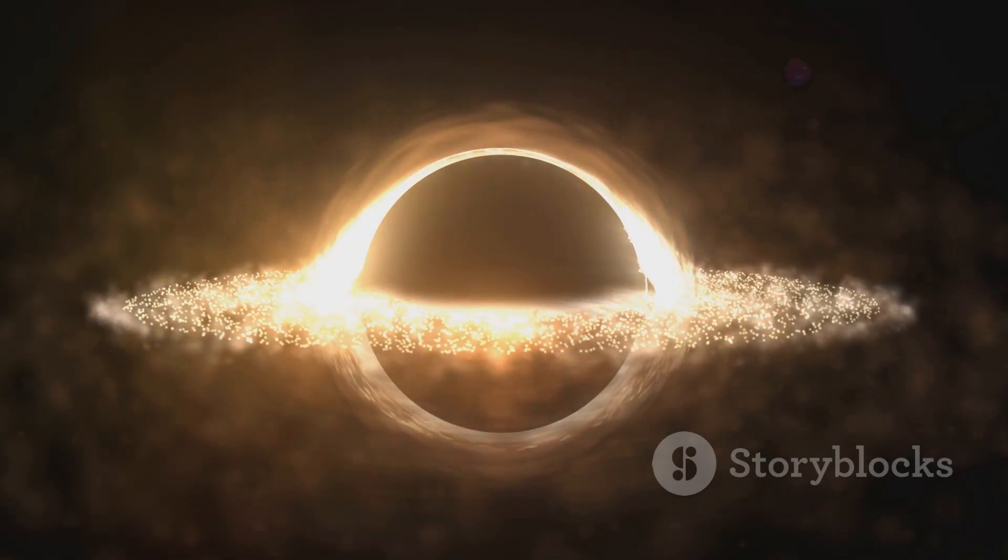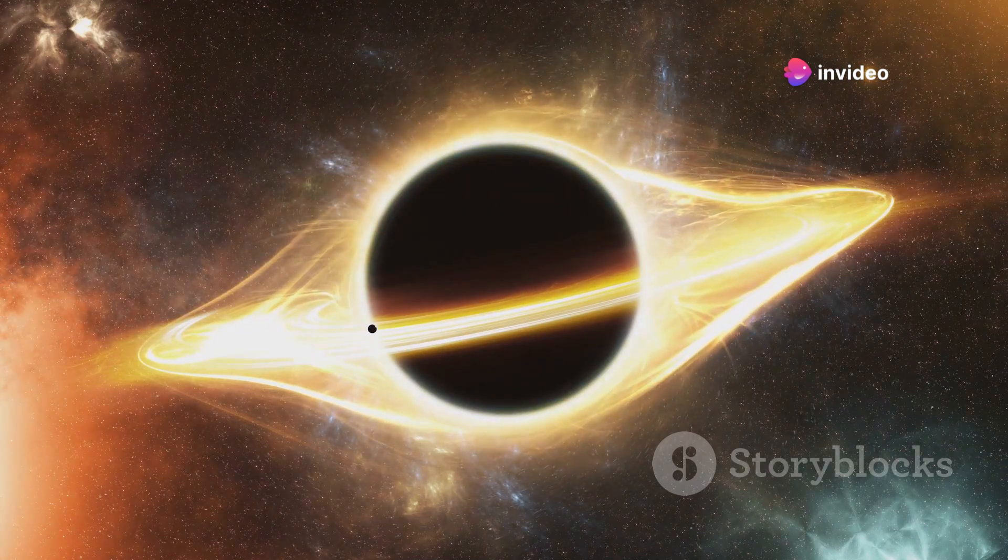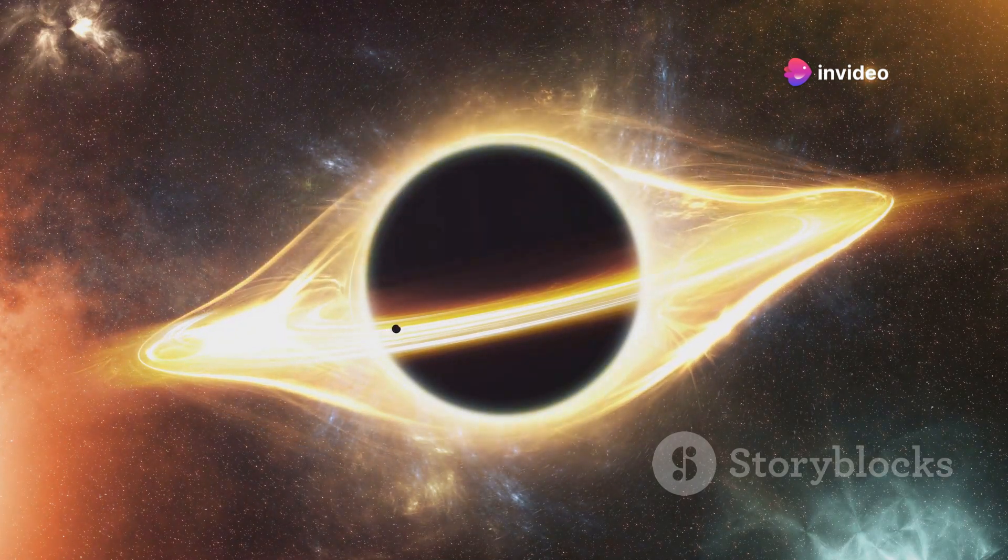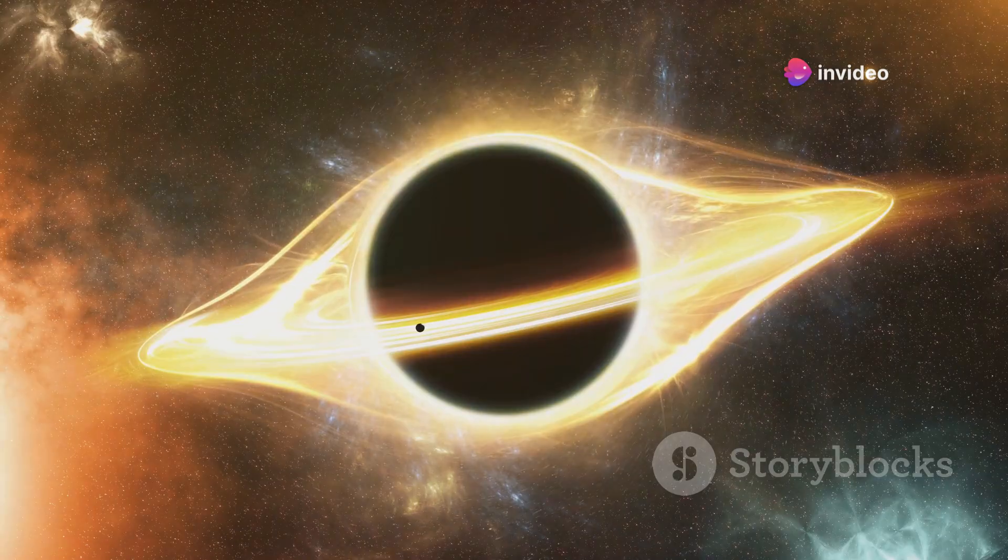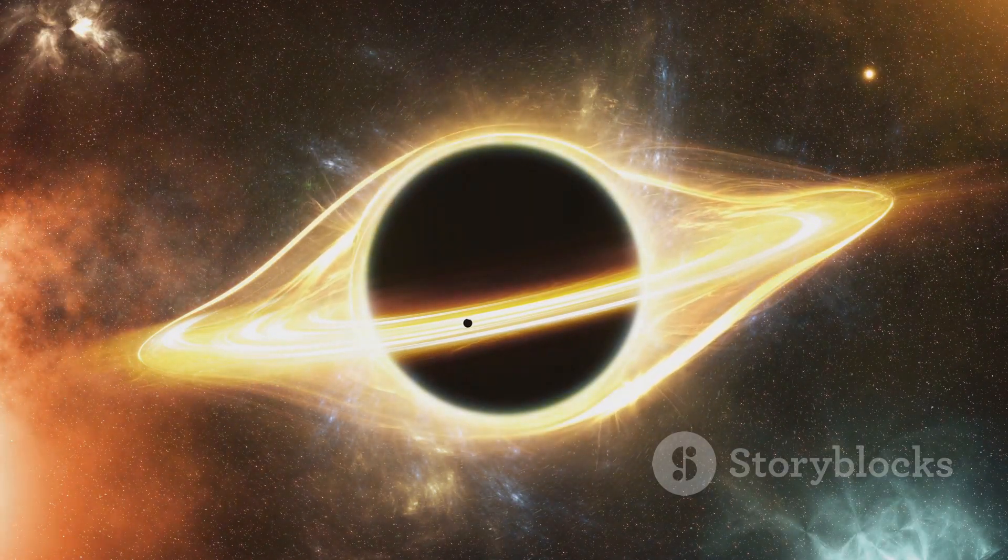Another possibility is that black holes are not entirely black. They might emit faint radiation, challenging the notion of them being perfect absorbers of all matter and energy. In the 1970s, Stephen Hawking showed that black holes could emit radiation due to quantum effects near the event horizon. This groundbreaking discovery changed our understanding of black holes. This radiation, known as Hawking radiation, could eventually cause a black hole to evaporate over incredibly long time scales. Black holes might lose mass and energy, ultimately disappearing from the universe.